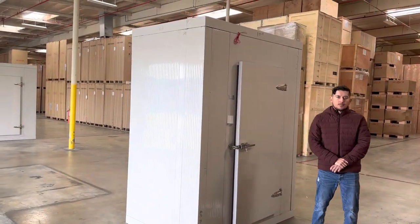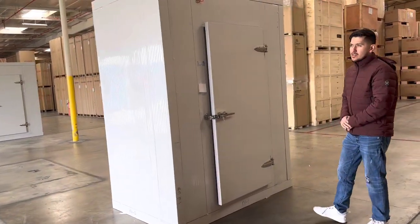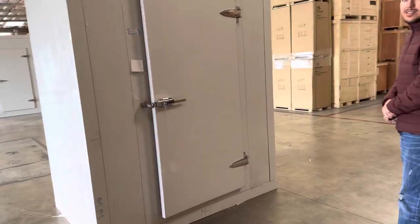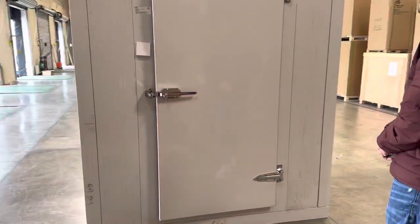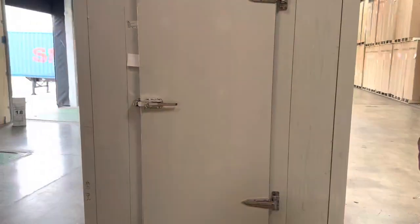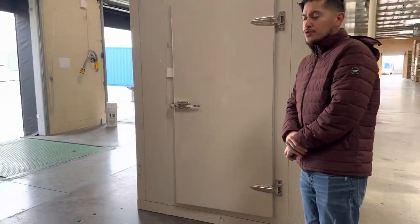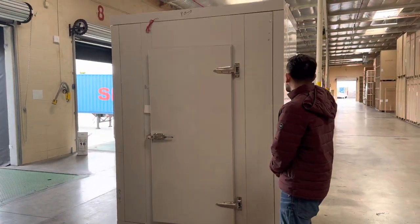Today we're going to demonstrate one of our brand new items. We're looking at one of our brand new walk-in boxes - this is a 4 by 6 walk-in box. You can use this for refrigeration or freezer, so we're going to demonstrate it for you.